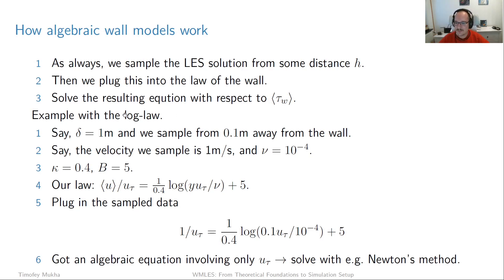So let's just take a concrete example. So we take some kind of boundary layer, which we say is 1 meter thick. Then we sample from 0.1 meters away from the wall. So about 1 tenth of the boundary layer thickness, which is reasonable. And let's say that we sampled 1 meter per second for the velocity. And that the viscosity of the flow we know is 10 to the power of minus 4. Let's settle for some constants for the log law. So for example, kappa 0.4 and B equal to 5. And then if we plug this into our law and explicitly write out what u plus and y plus is, we'll get u over u tau, that's u plus, equals to 1 over kappa, so 0.4. And then the log of y plus, so that's y times u tau and then over nu. And plus B, so plus 5.